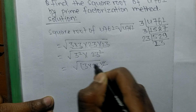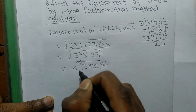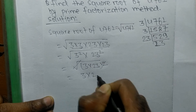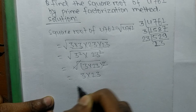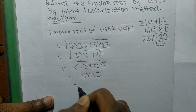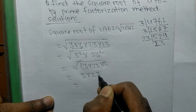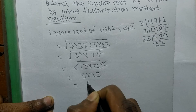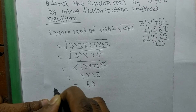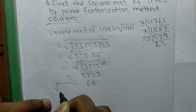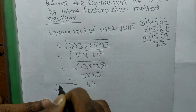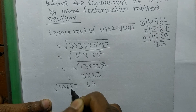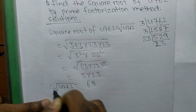We remove the square root sign from the squared terms, giving us 3 times 3 times 23, which simplifies to the final answer.